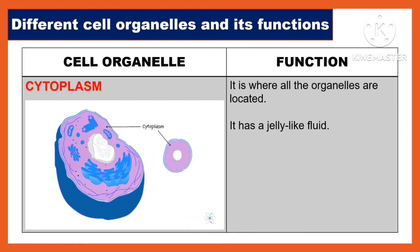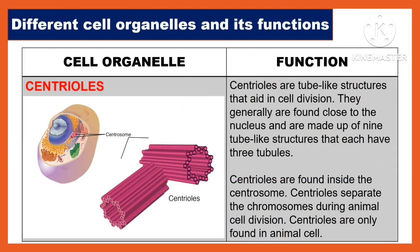Another cell organelle is the cytoplasm — it is where all the organelles are located and has a jelly-like fluid. Another organelle is the centriole. Centrioles are tube-like structures that aid in cell division, generally found close to the nucleus, and made up of nine tube-like structures each having three tubules. Centrioles are found inside the centrosome and separate chromosomes during animal cell division. Centrioles are only found in animal cells.